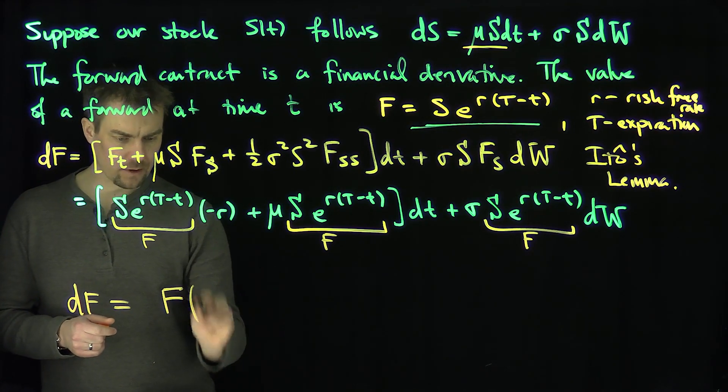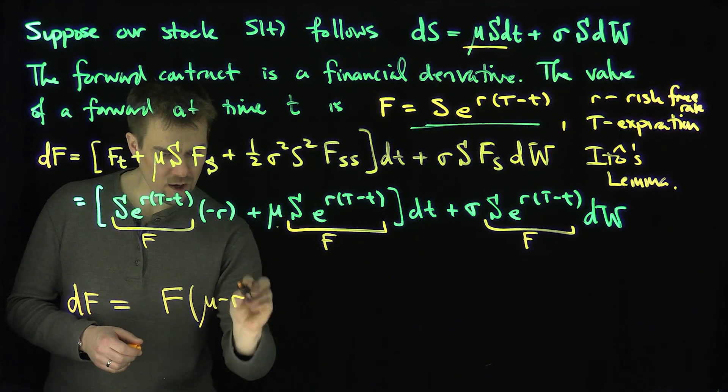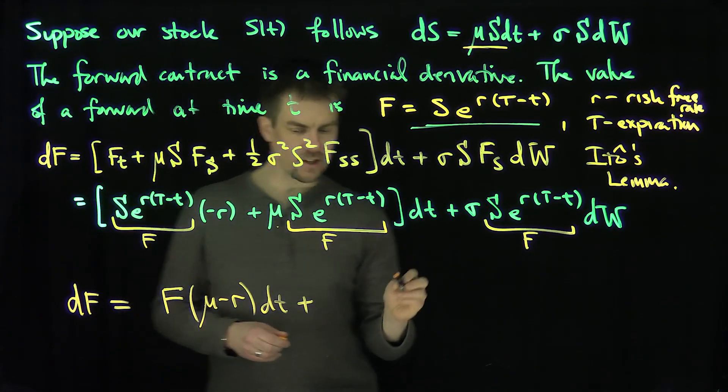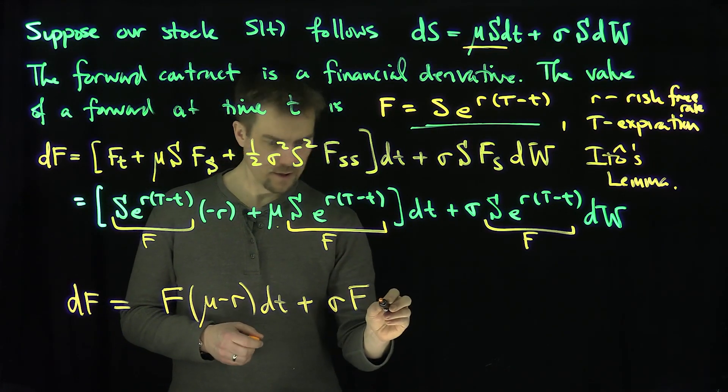It's going to be F capital, the value of the forward contract, then I have (μ - r) dt, plus σF dW.